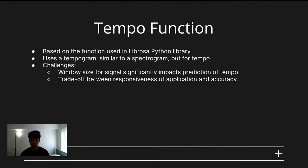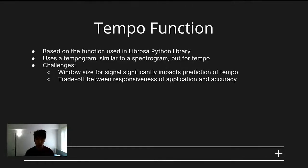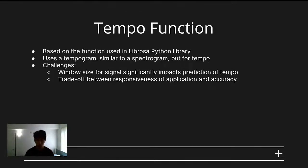I'd like to dive a bit deeper into the tempo function that we ended up using. The function is based on the function used in the Librosa Python library. The general idea is that the function computes a tempogram, which is analogous to the spectrogram in the time domain. We encountered several challenges with using this function, the first being that window size has a significant impact on the accuracy of the tempo prediction. Therefore, there seems to be a trade-off between the responsiveness of the application — how frequently the application updates — and the accuracy of the application.